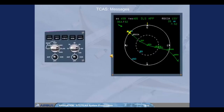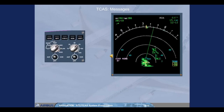If the ND is in plan mode and a traffic advisory or resolution advisory is detected, a 'traffic traffic' message is displayed on the ND to draw the pilot's attention to change to rose or arc mode. If a TA or RA is detected, a message is also displayed when the ND range is above 40 nautical miles. Depending on the advisory level (TA or RA), the ND mode and range messages will be in amber or red.